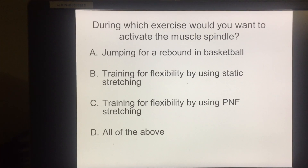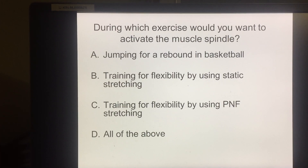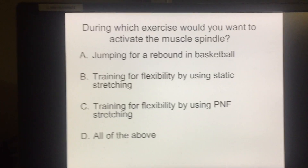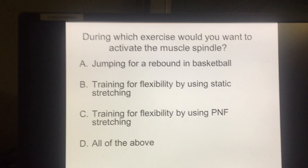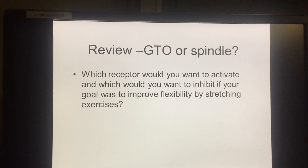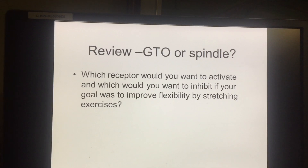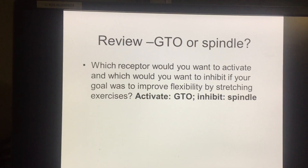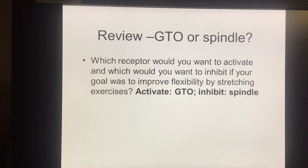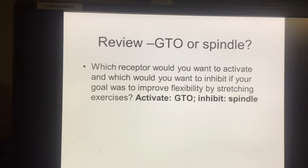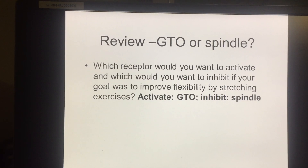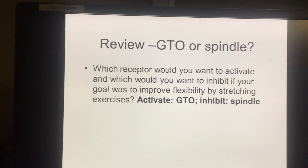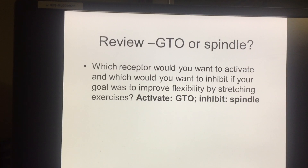For the other two options, you would want to inhibit your stretch reflex during any type of stretching exercise because you don't want your muscle contracting while you're trying to stretch it. For the next question — Golgi tendon organ or muscle spindle: which would you want to activate and which to inhibit if your goal was to improve flexibility? The GTO causes reflex relaxation of the muscle, which is good for stretching, whereas the spindle causes reflex contraction, which is counterproductive. So you want to activate your GTO and inhibit your muscle spindle.